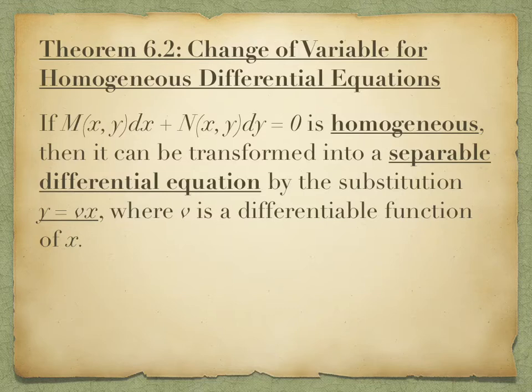If you have one of these homogeneous equations — M(x,y)dx + N(x,y)dy = 0 — it can be transformed into a separable differential equation. It should be no surprise how: it's done by that same substitution we just used. The substitution is to replace y with vx, where v is a differentiable function of x. By replacing all the y's with vx, we'll be able to separate the function with x's on one side and v's on the other, because we won't have any y's left.